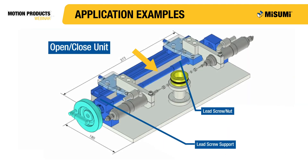In this application, a left and right hand thread lead screw is utilized to create a pinching type action. This simplifies the mechanism in that two separate screws are not required, nor are the components needed to synchronize their motion. All that is required to achieve this motion is one lead screw, two nuts, and the support units — resulting in a cheap, compact design that's robust and reliable.